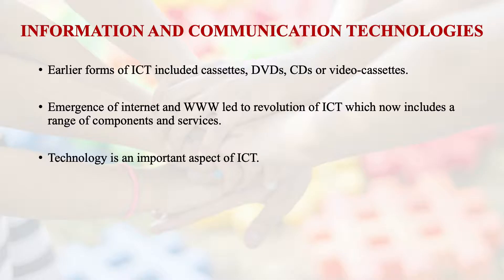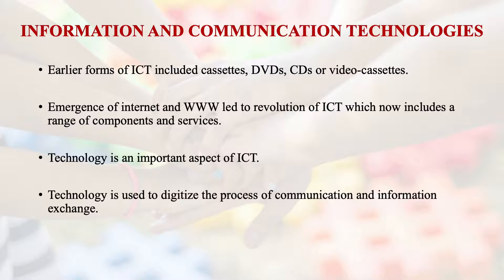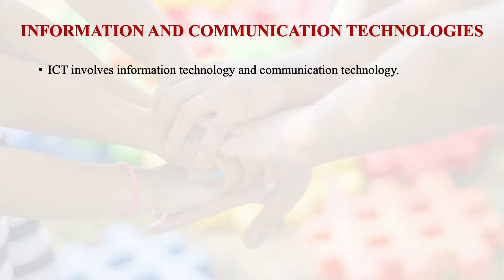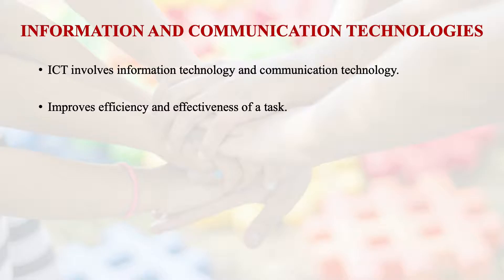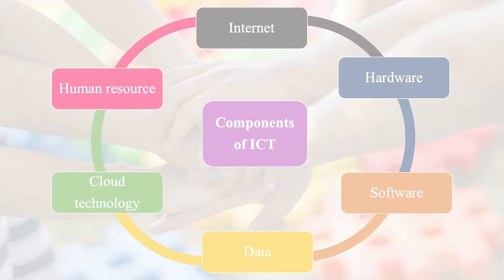Technology is one of the most important aspects of ICT, but without information and communication, technology is redundant. Technology is used to digitize the process of communication and information exchange. ICT involves different kinds of information, different kinds of communication, and it is a combination of information technology (IT) and communication technology (CT), improving the efficiency and effectiveness of a particular task. These are some of the components of ICT: hardware, software, data, cloud technology, human resource, and internet.